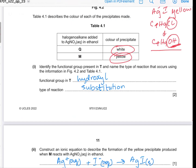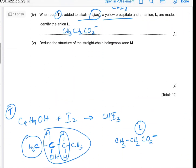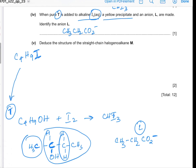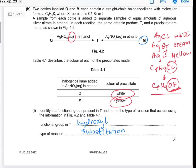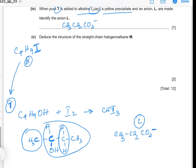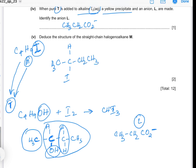Part 5: Deduce the structure of the straight-chain halogenoalkane M. M formed the yellow precipitate so M contained iodine, with formula C₄H₉I. M also forms T (the alcohol), so when M forms T, iodine is replaced by a hydroxyl group. Since the hydroxyl group is on the second carbon atom in T, the iodine in M was also on the second carbon. Therefore the structure of M is CH₃–CHI–CH₂–CH₃.